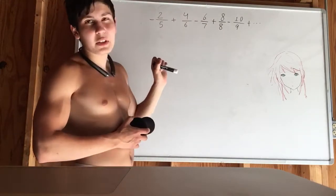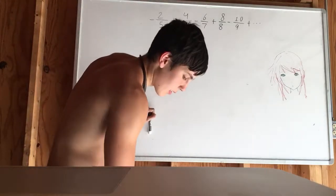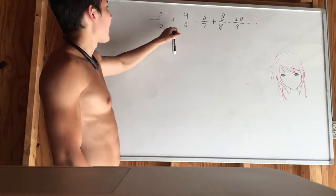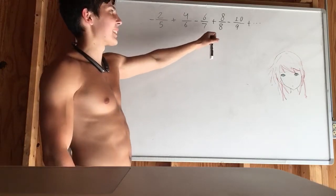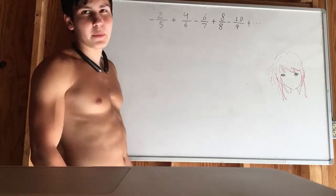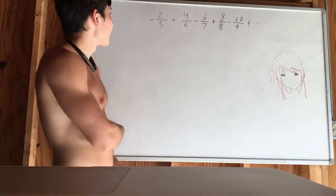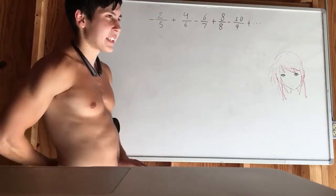If they are increasing, then we can't use them. So in this case, they are increasing. We have 2/5 and 4/6 and 6/7 and so on, right? It's increasing in absolute value terms. So we definitely can't use the alternating series test.